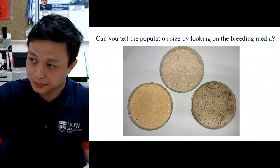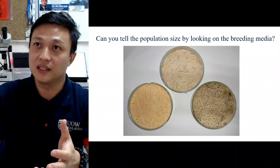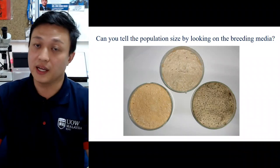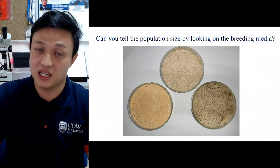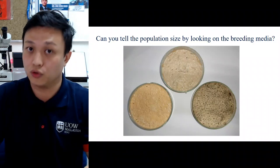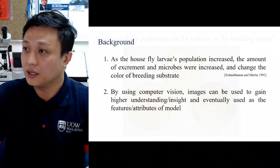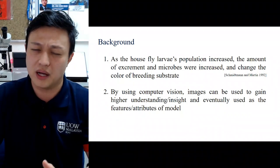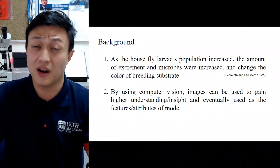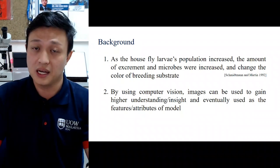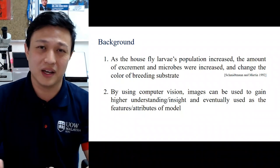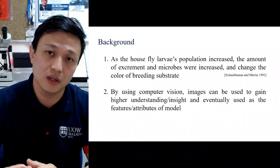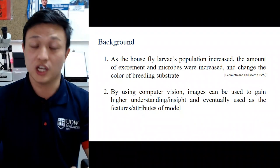We can estimate population size — for example, the darker color should indicate a higher population size. To be more specific, we designed population size categories according to levels, and then used those images as information to train the machine learning model. The background explanation is that as housefly larval density increases, excrement and microbes also increase, which changes the color of the substrate.